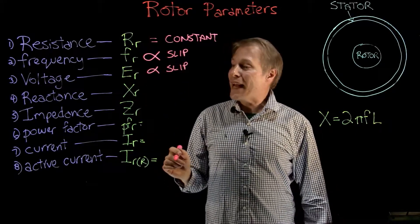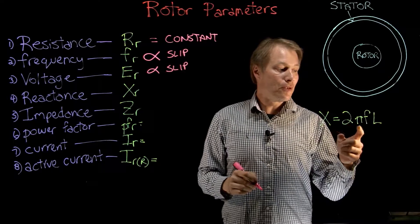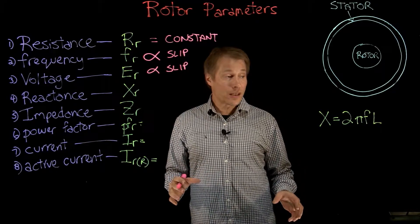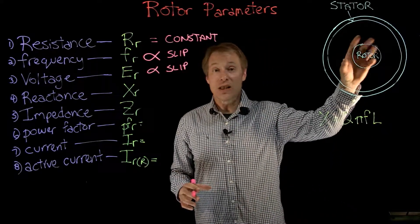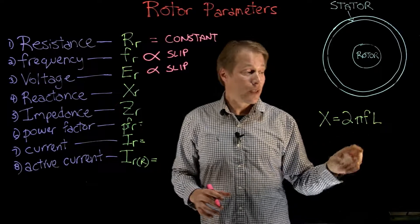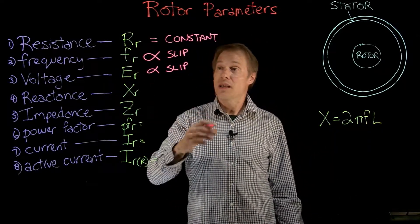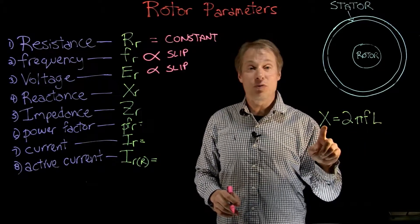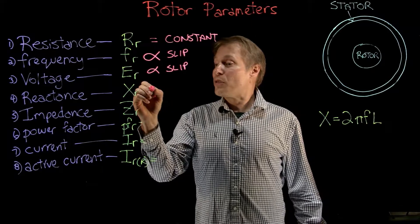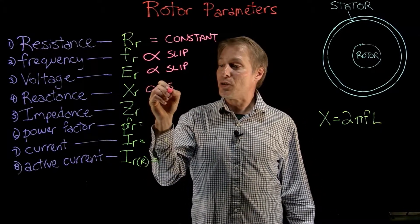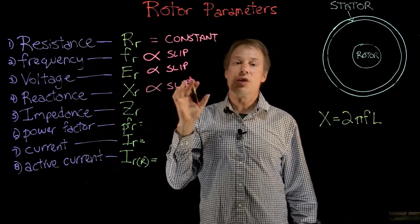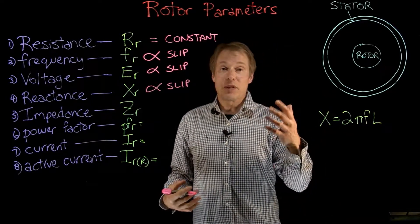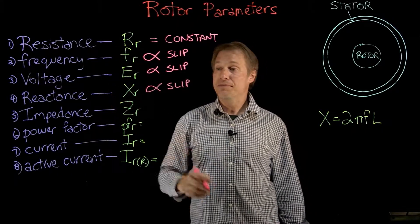For reactance, we have the formula X = 2πFL. The 2π is a constant, and inductance L is a physical property that we're not physically changing in the rotor, so it's also a constant. The only variable left is frequency — and we already established that frequency is proportional to slip. So if frequency is proportional to slip, then reactance is also proportional to slip. All three — frequency, voltage, and reactance — are directly proportional to slip. If slip doubles, each of these parameters doubles too.